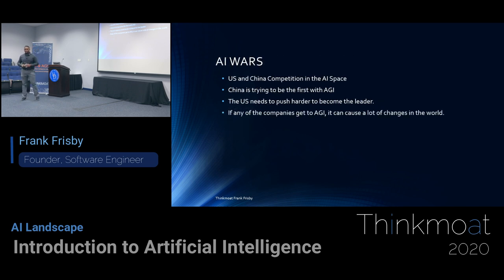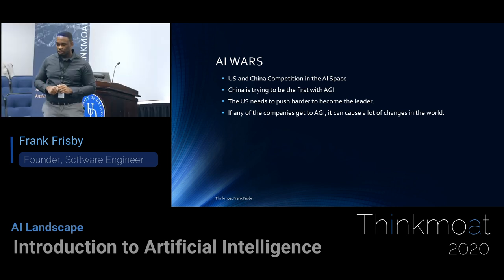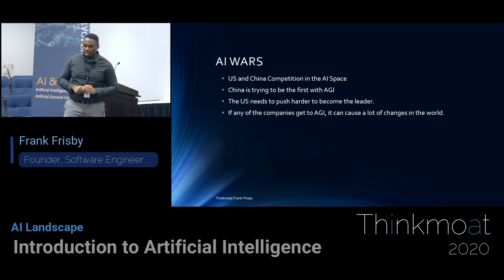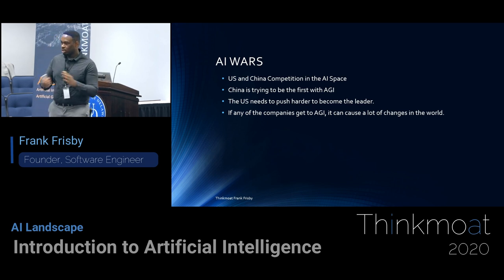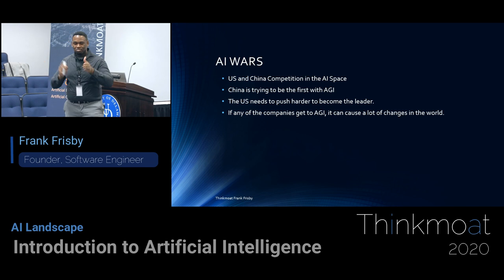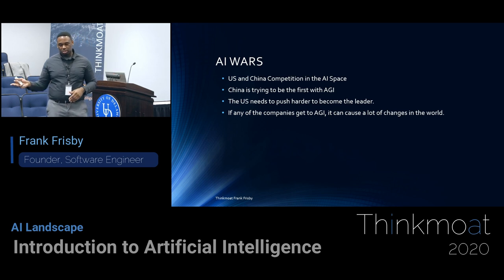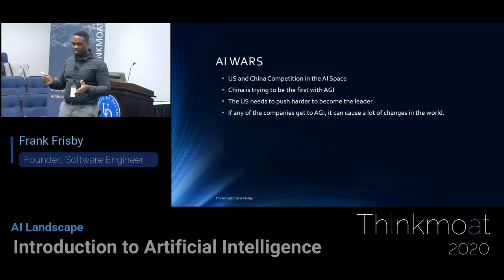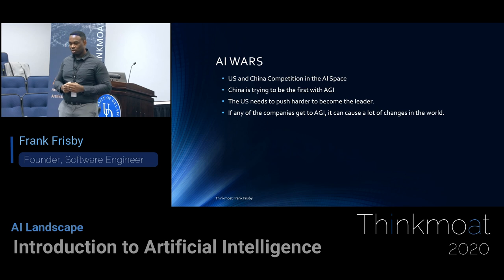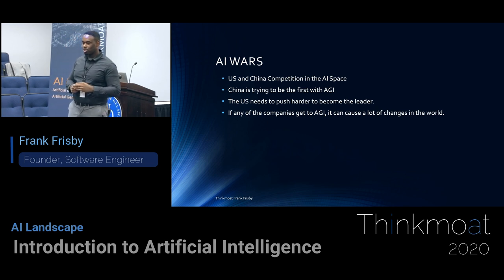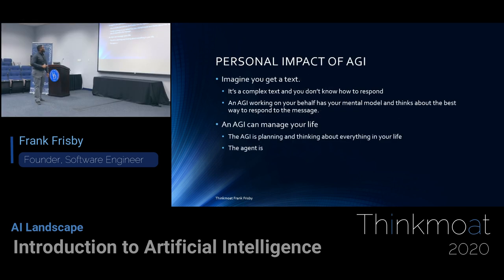AI wars: China has put out an initiative for around 2025 to 2030. They want to be the dominating country in the world to have AGI and put America behind. So there's that big thing going on — America versus China, with a lot of other countries mixed in. Beyond that, there are also AI wars between companies. They are trying to do whatever they can to take in people, which is why we'll talk about how much they get paid — a significant amount of money.